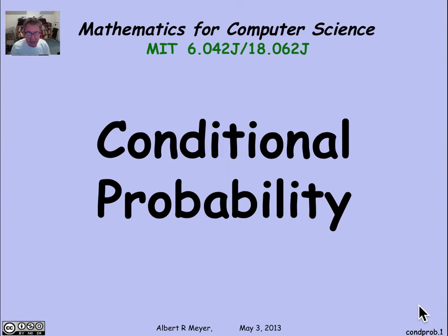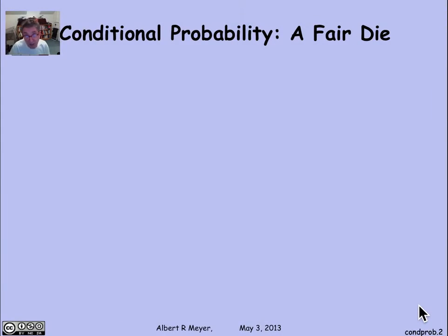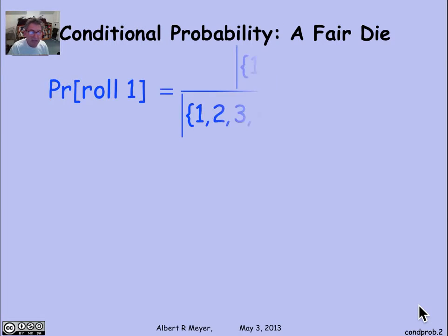So let's look concretely at a very simple example of conditional probability that's meant to be illustrative, where we look at rolling a fair die. Now, if I'm thinking about an ordinary fair die, I've got six outcomes that are equally likely. The outcomes are 1, 2, 3, 4, 5, 6.